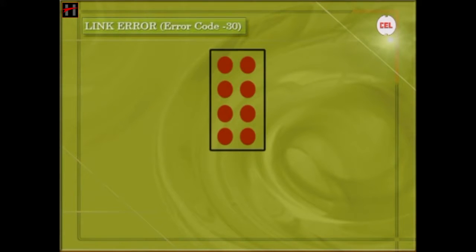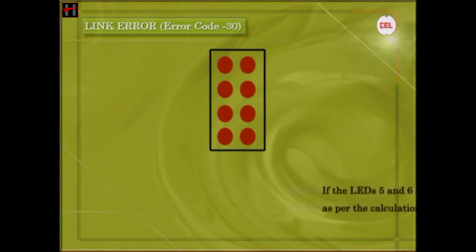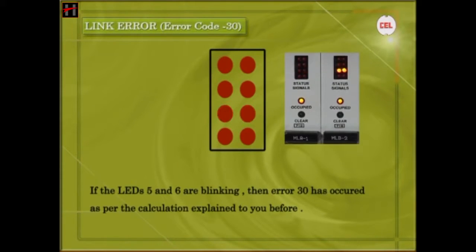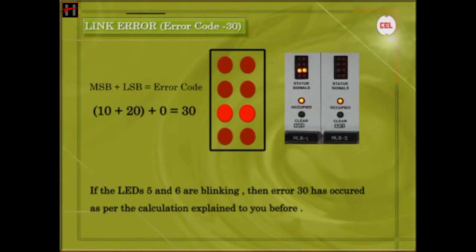Link Error: If the LEDs 5 and 6 are blinking, then Error 30 has occurred, as per the calculation explained previously.